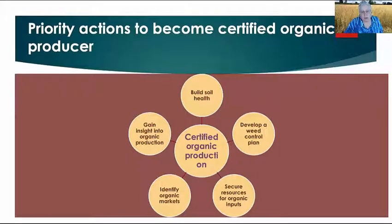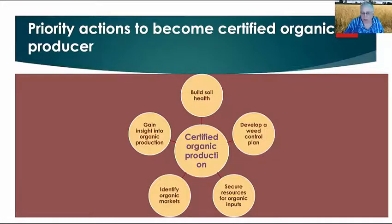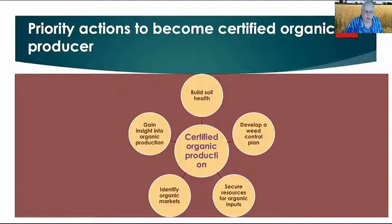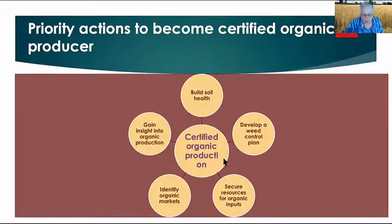When becoming certified, first gain insight into organic production: visit farms, talk with farmers, go to organic conferences, and build your soil. As Jim Sadelberg showed, he started working on soil health four or five years before even thinking about organic, because without good soil you can't get a good crop. Develop a weed control plan — weeds are probably the biggest challenge. Organic weed control is typically through mechanization, and these days there are LP and electric systems to zap weeds at field scale. Secure sources of organic inputs like manure or seed, identify your organic markets, and you can achieve good organic production.